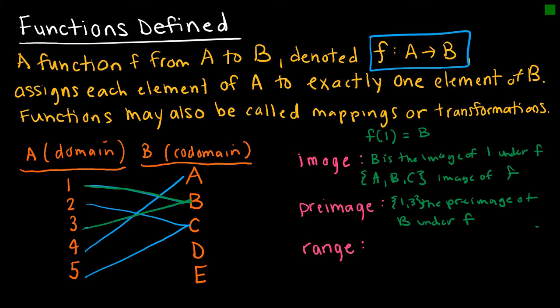So the range is the set of all images, so the outputs, that are mapped to from the first set. So in this case, the range would be those values a, b, and c, because these are all values that were mapped to from the domain of a.